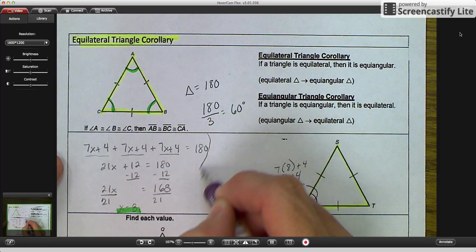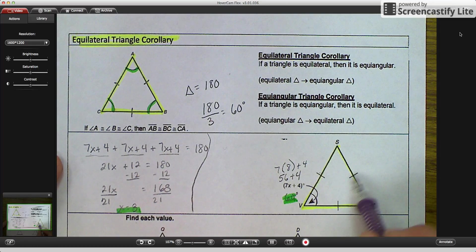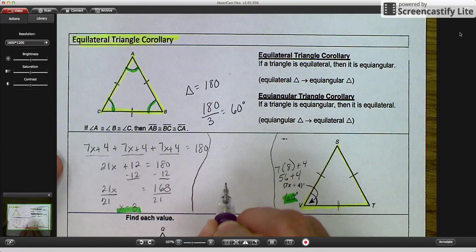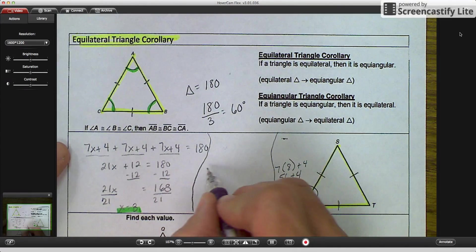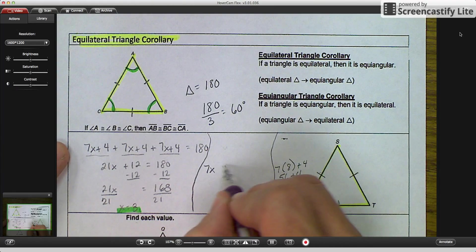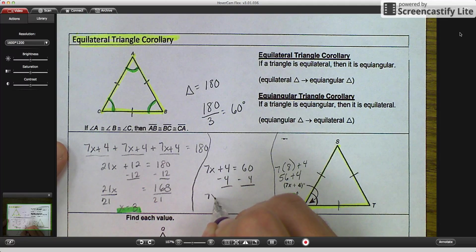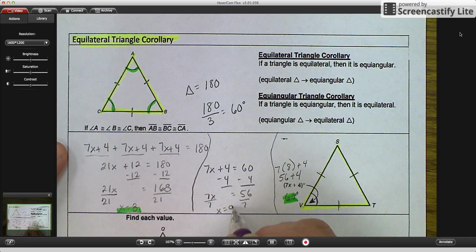Another way, might be a little bit quicker, is if you see that it is equilateral, you know that it's equiangular. What you can do is you can take that angle measurement, and this is a second option. You don't have to do this one. You have two options, and you go 7x plus 4 is equal to 60, a little bit quicker. And then you subtract 4, and you get 7x is equal to 56, divide by 7 this time, and you get x equals 8.